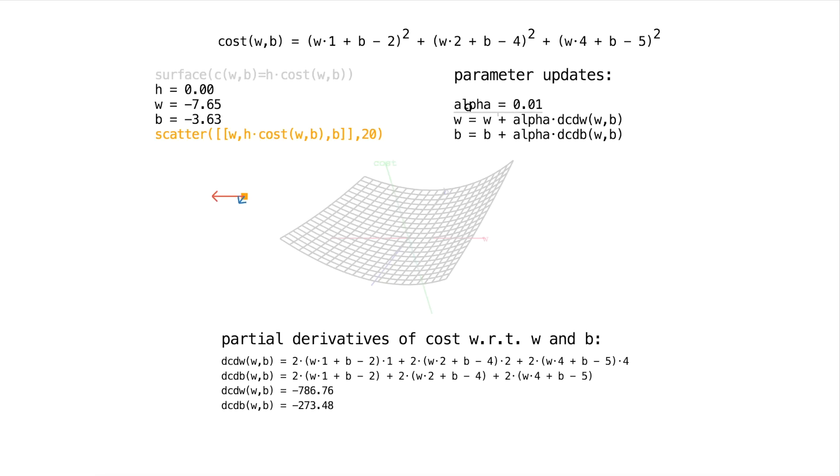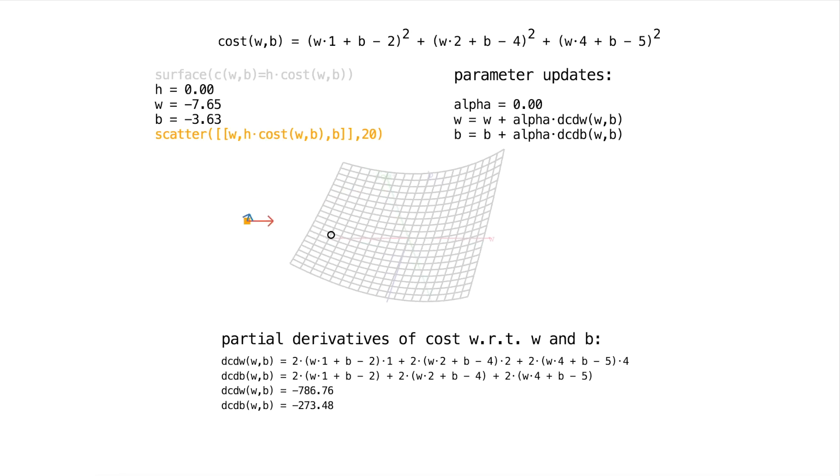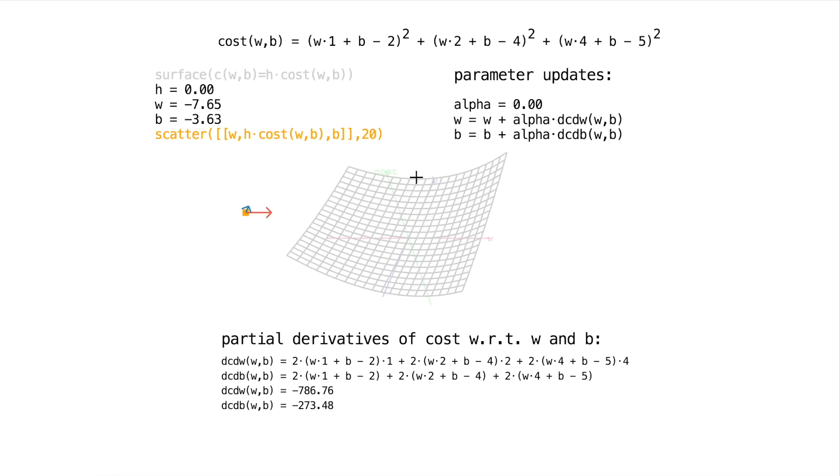So instead, we want to subtract a fraction. And now you can see that these two directions are pointing towards this valley here of our cost function. So if I apply these updates, you can see I'm shifting in the b direction when I change b. I'm shifting in the w direction when I change w. And, amazingly, our settings for w and b slowly approach a minimum.